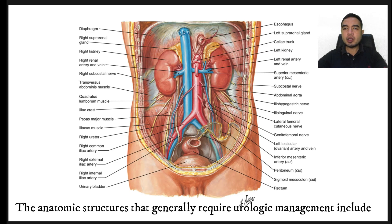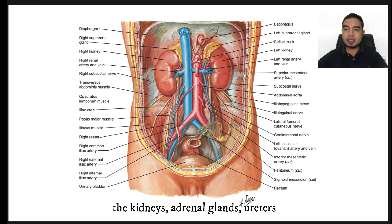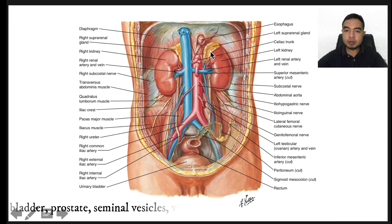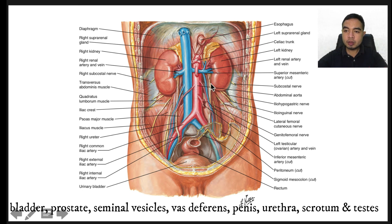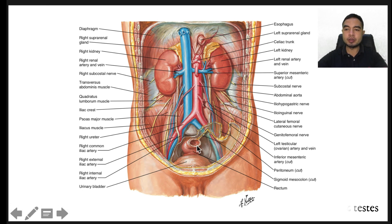The anatomic structures that generally require urologic management include the kidneys, adrenals, ureters, bladder, prostate, and seminal vesicles. Vas deferens, penis, urethra, scrotum, and testes represent the reproductive organs.